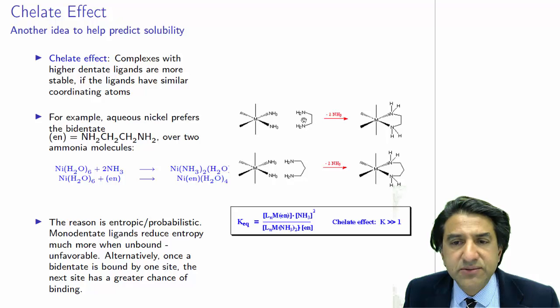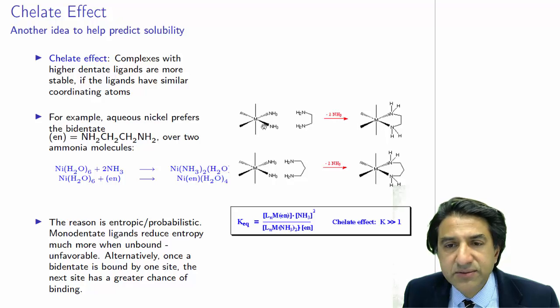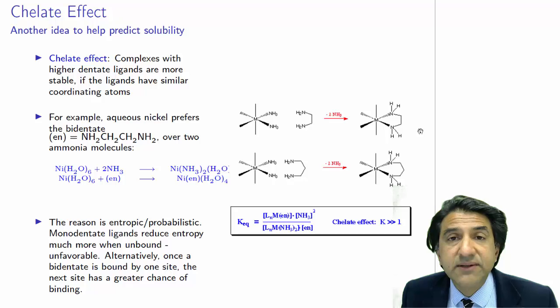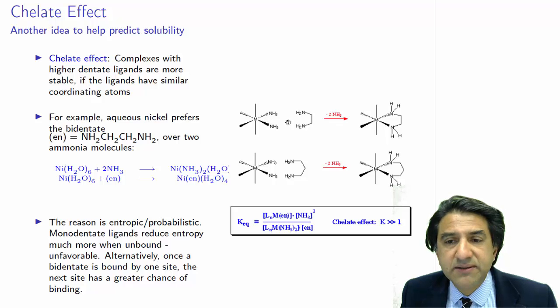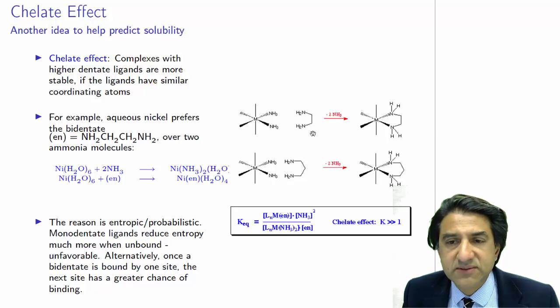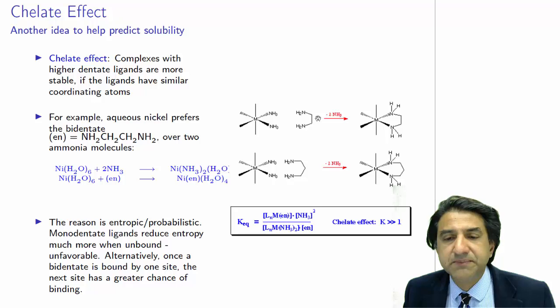Here the ethylenediamine joins onto here, and it kicks off two ammonia molecules. So whereas there was one ethylenediamine molecule floating around in solution, after the reaction, there are two ammonias floating around in solution. So entropy has increased. First, the energy can be distributed amongst two molecules, whereas previously it was distributed amongst this one big molecule.